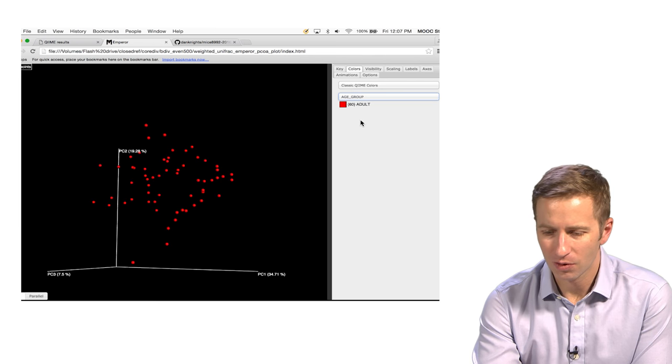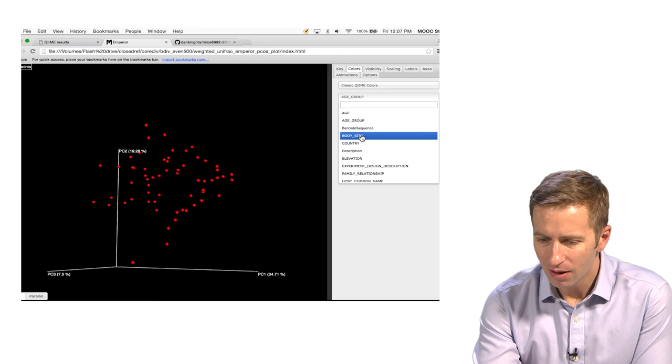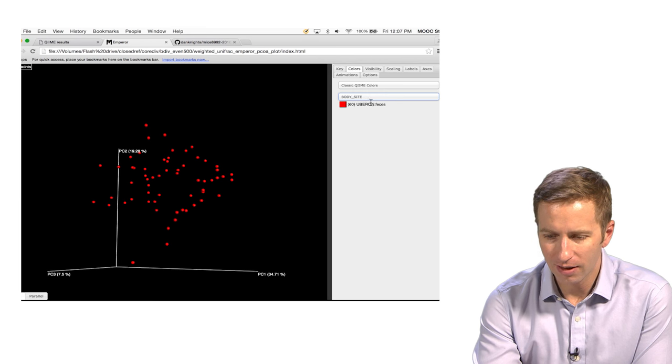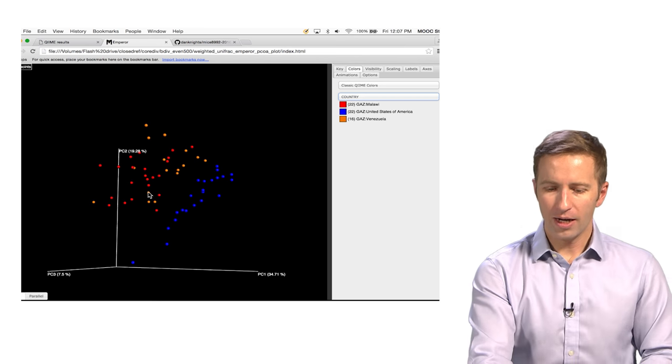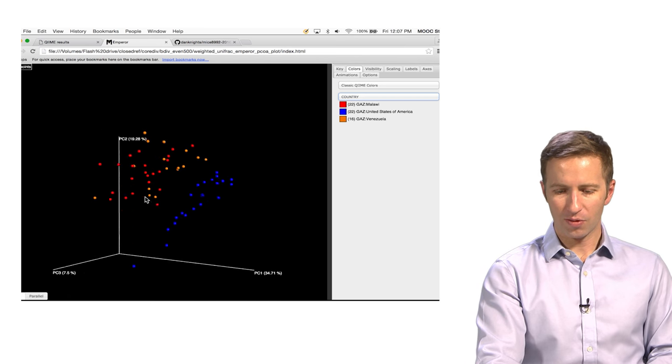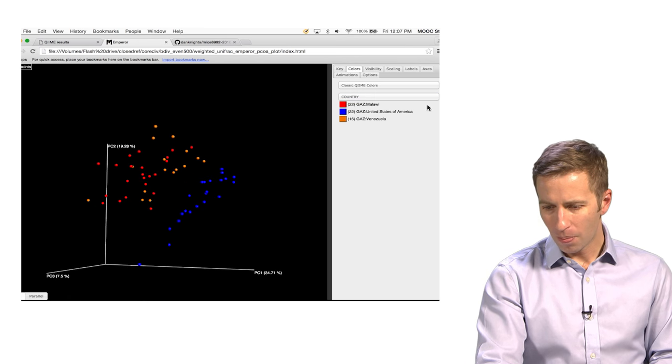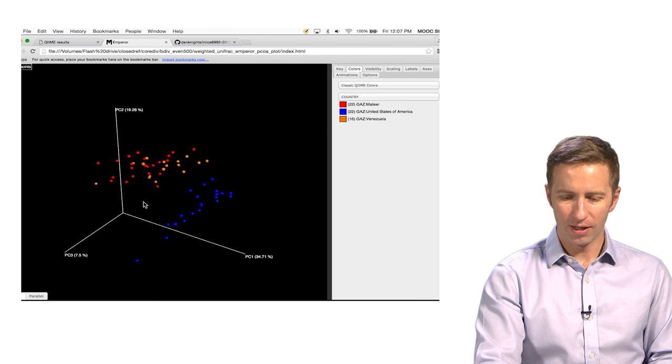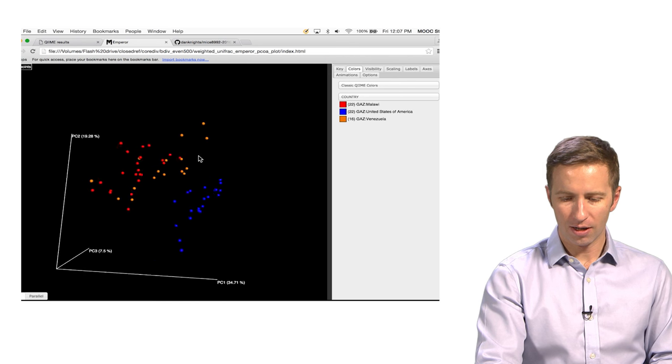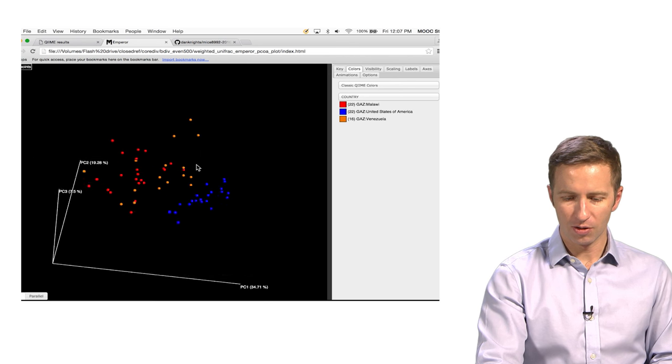but these are all adults. So there's nothing interesting there. Body site, they're all stool samples. But if we look at country, now we see this really strong separation. So the blue samples are from the USA, the red and orange are from Malawi and Venezuela. And pretty much any way you look at it, these are very separate distributions.